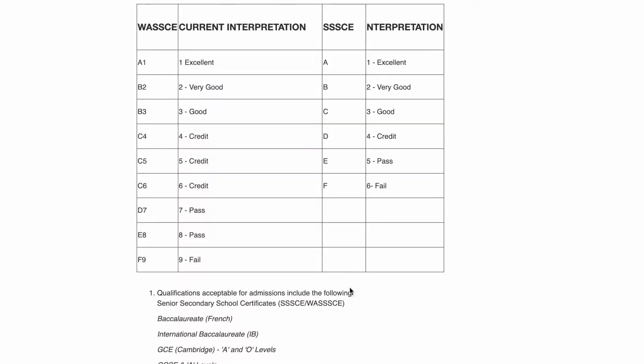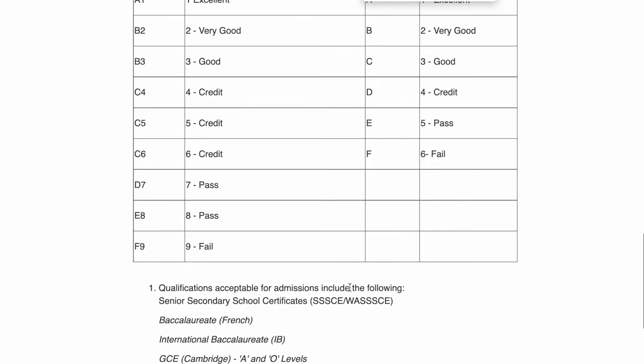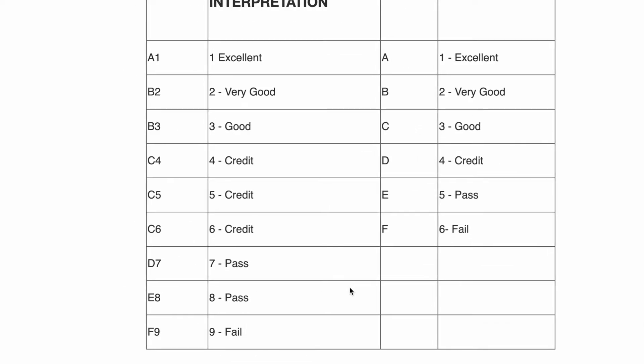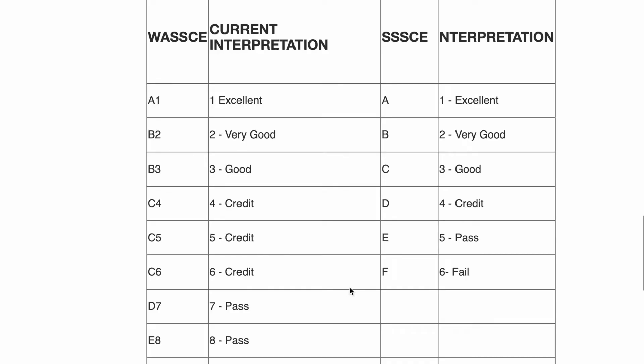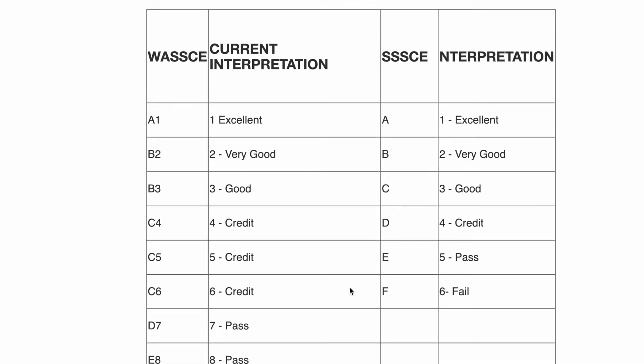When it comes to the calculation, numbers are attached to the WASSCE grades: A1, B2, B3, C4, C5, C6 — those numbers 1, 2, 3, 4, 5, 6 are the numbers you are going to add up to find your aggregates. So if you have A1, then 1 is the number; if you have B2, 2 is the number; if you have B3, 3 is the number, and so on.